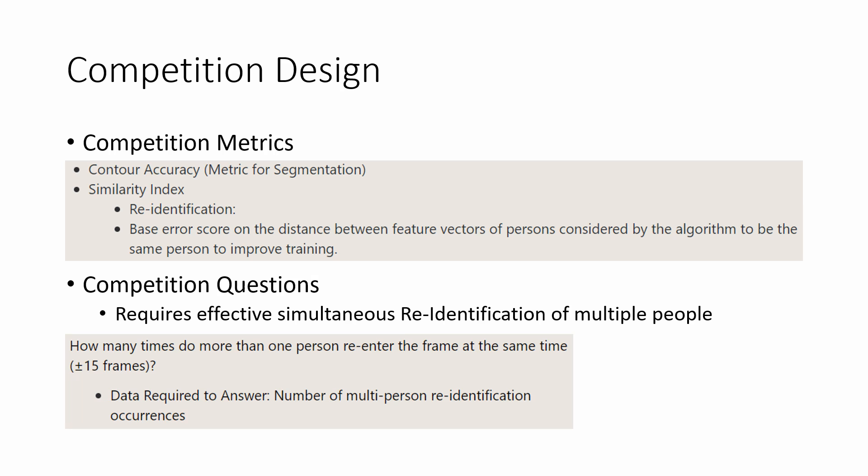I believe the re-identification score should be partially determined by the error or distance between ground truth feature vectors of people classified as the same person. Our team also needs questions to score competitors on. I believe solutions should be fully capable of simultaneously re-identifying people, as real-world applications on autonomous drones would need to handle many people entering and leaving view at once. As such, I proposed a competition question asking how many people re-enter at the same time, defined by a section of plus or minus 15 frames.